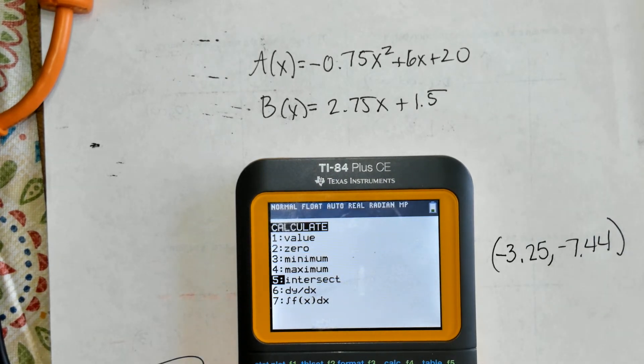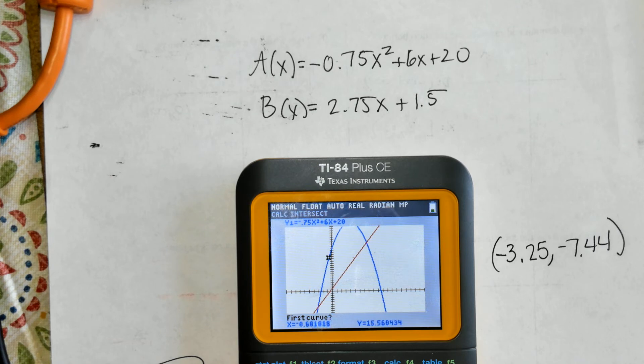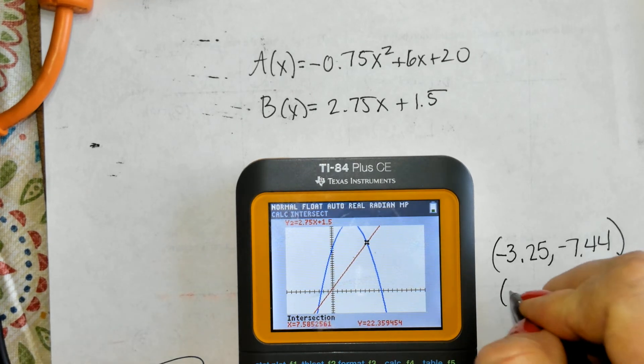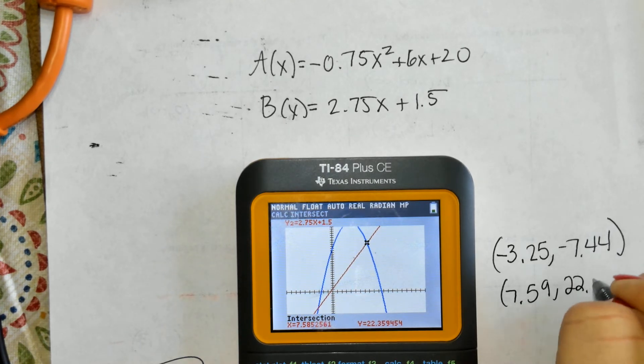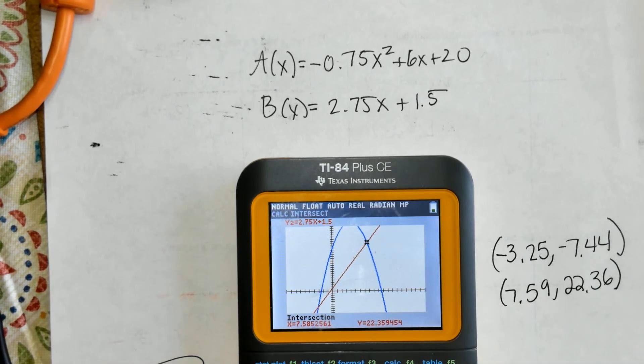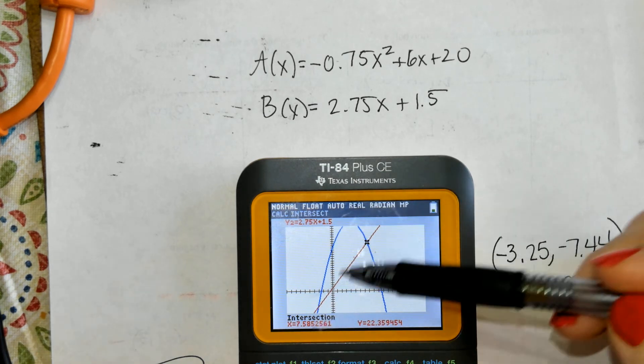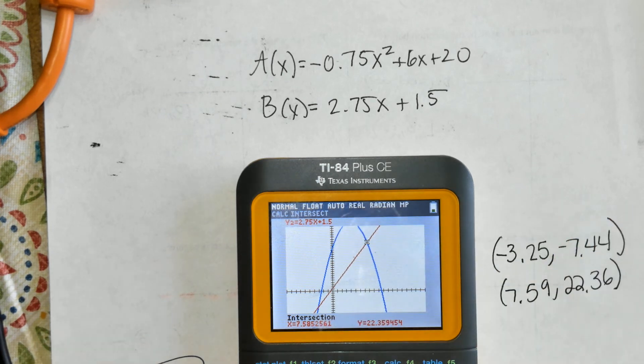The second trace intersect. The second answer is 7.59 when rounded and 22.36 when rounded to the nearest hundredth. Reminder that this X represents the number of months and the Y is then the price of the stock.